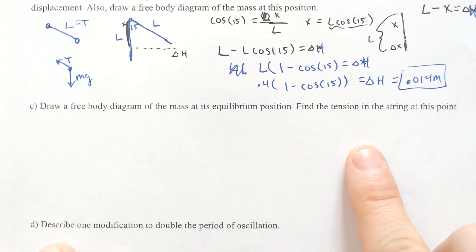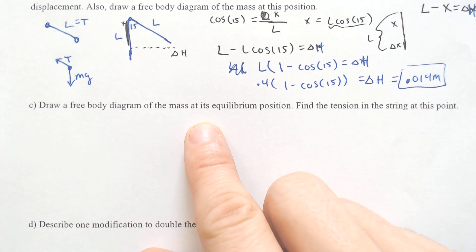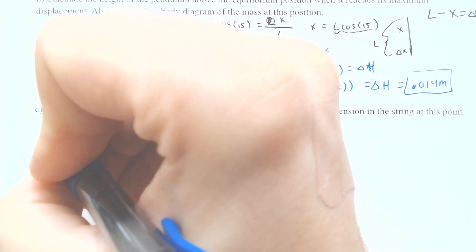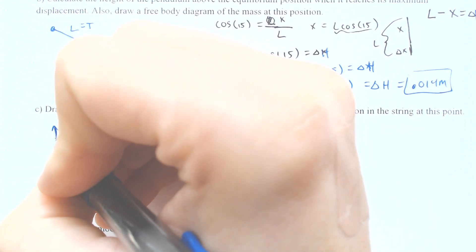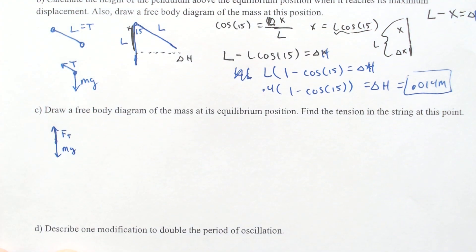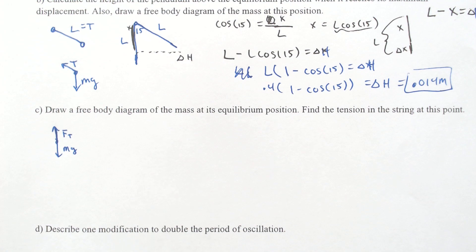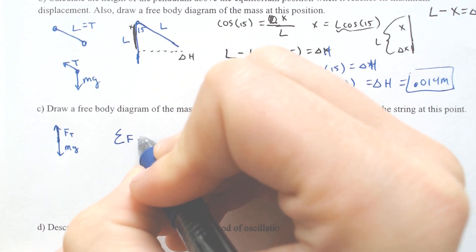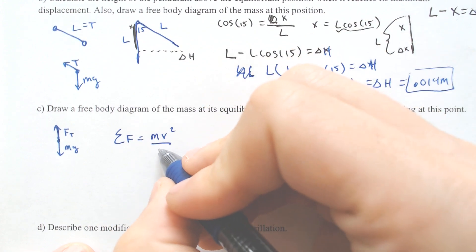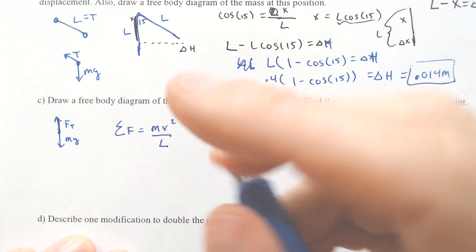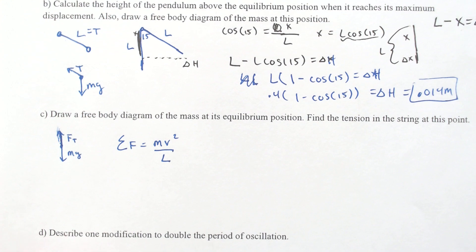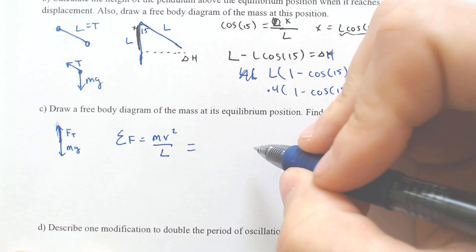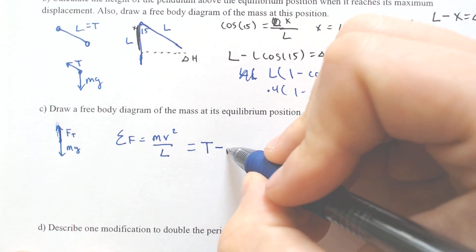For the second part — drawing a free body diagram at the equilibrium position and finding the tension — at the equilibrium position we have the force of tension pulling upward and the force of gravity pulling downward, and the motion is also governed by centripetal force. So the sum of all forces equals mv squared over L, where the radius is the length of the string.